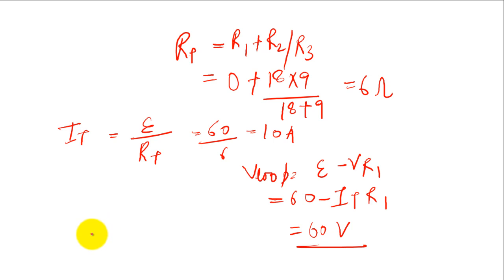The current across R2 is IR2 which is 60 upon 18. So we get 3.33 ampere. And the current across R3 is equals to IT minus IR2 which equals to 6.67 ampere.